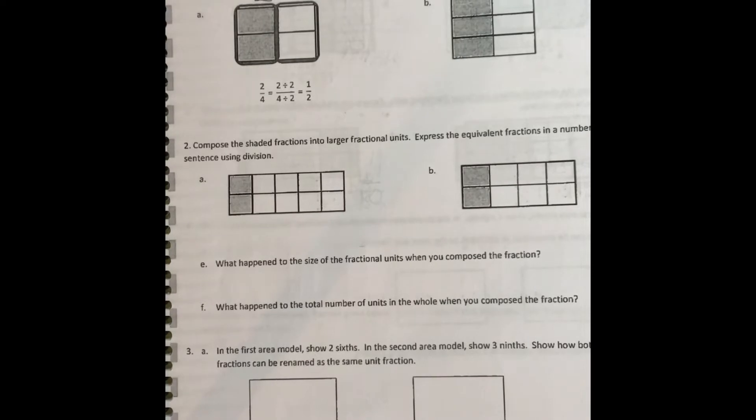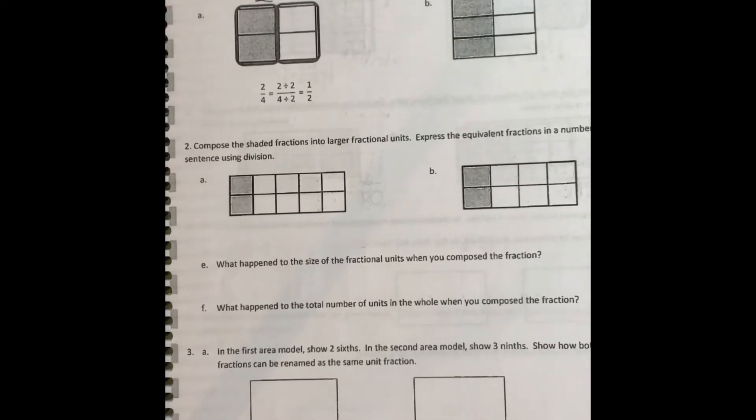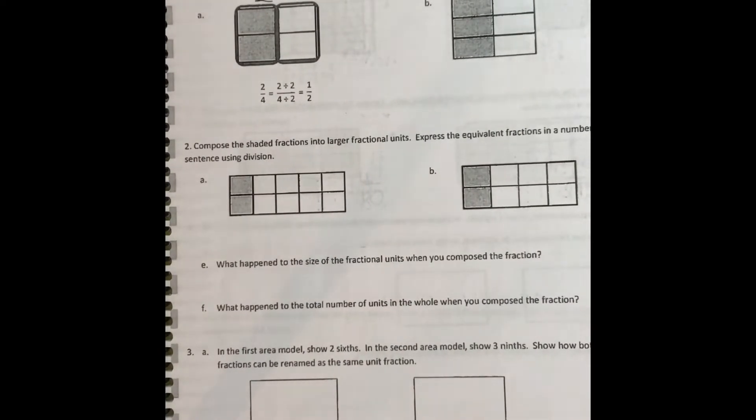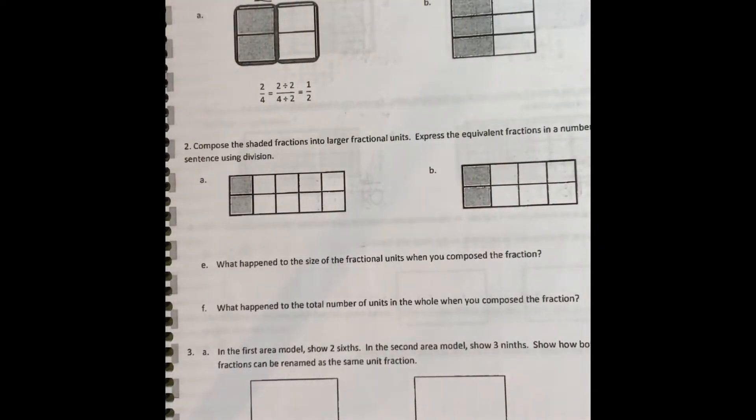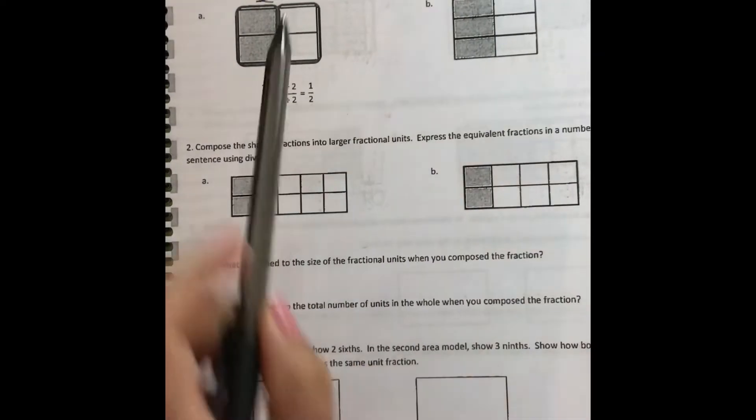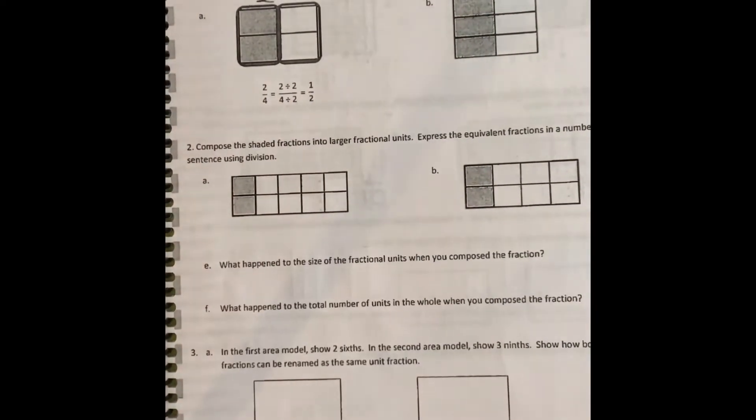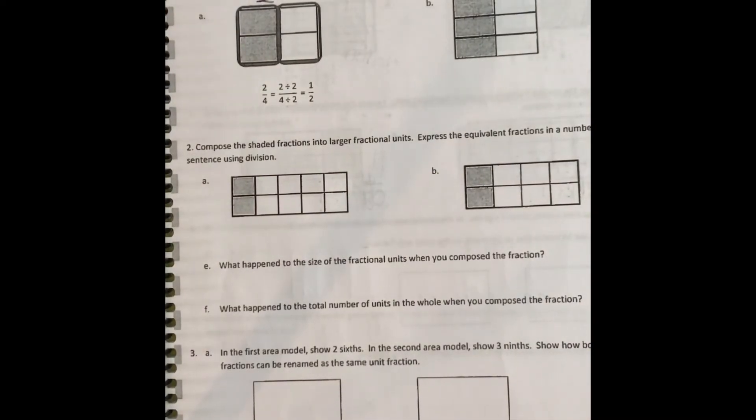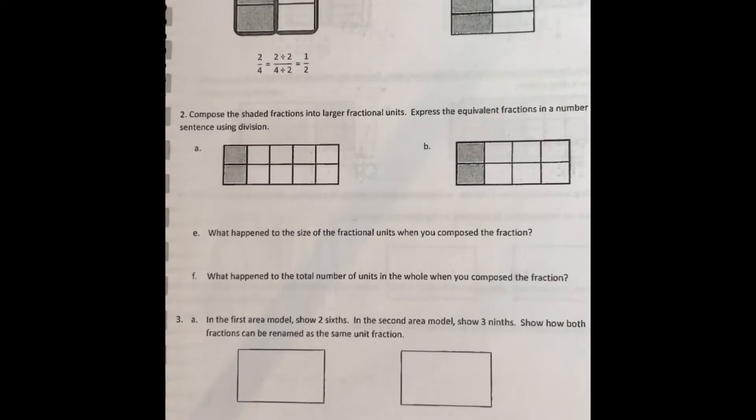So what I want you to look at first is this first example. You'll see that they started with two fourths. Two out of the four were colored in and they divided by two and when they divided that by two they saw that one, two parts out of the four. So it was one half. So we're doing the opposite of what we did last week.